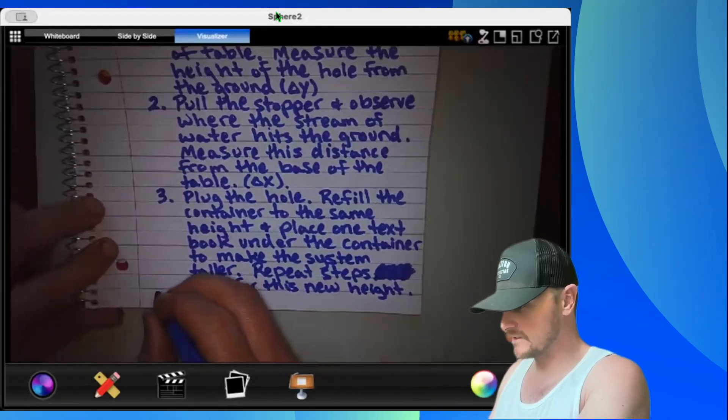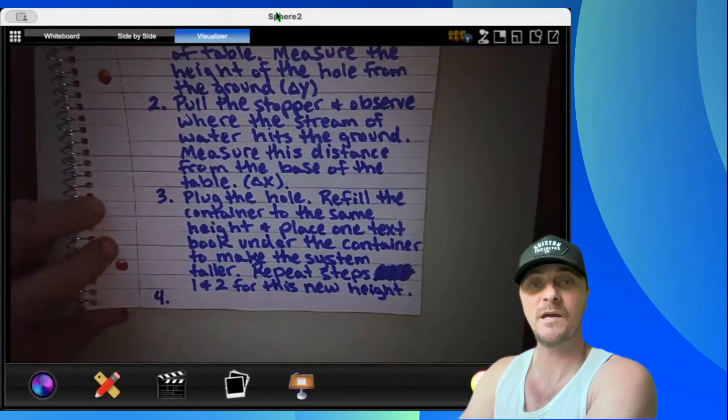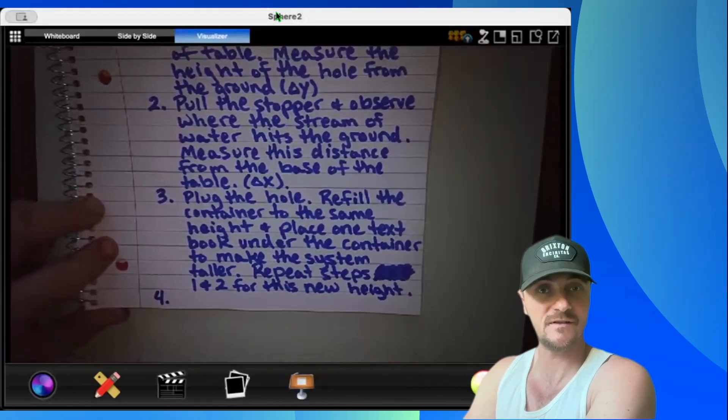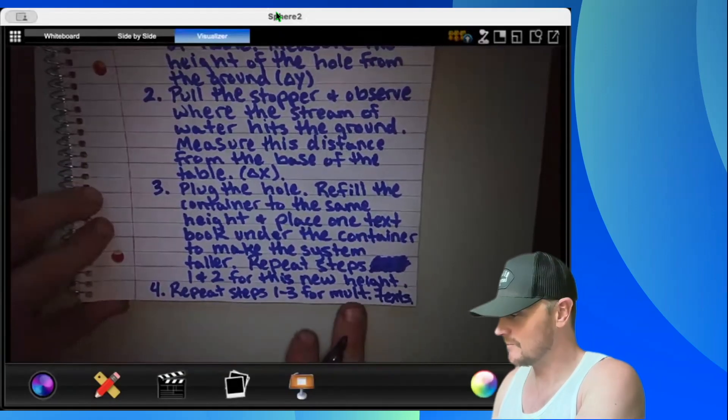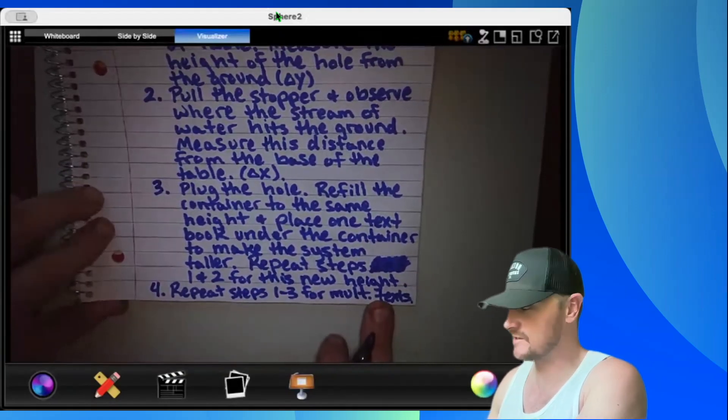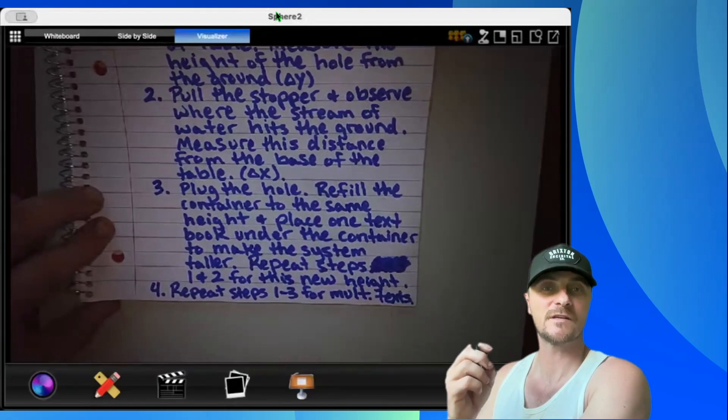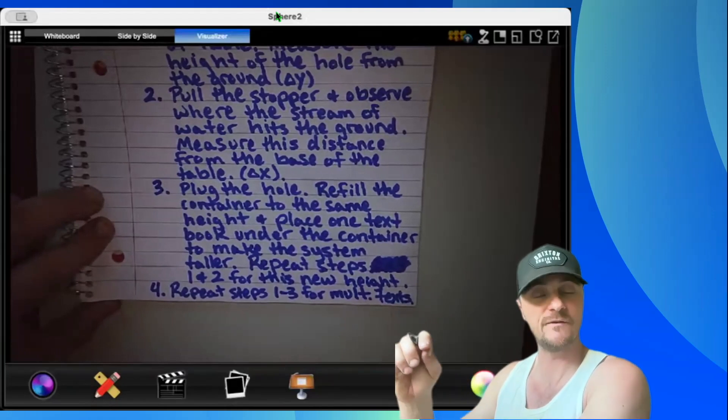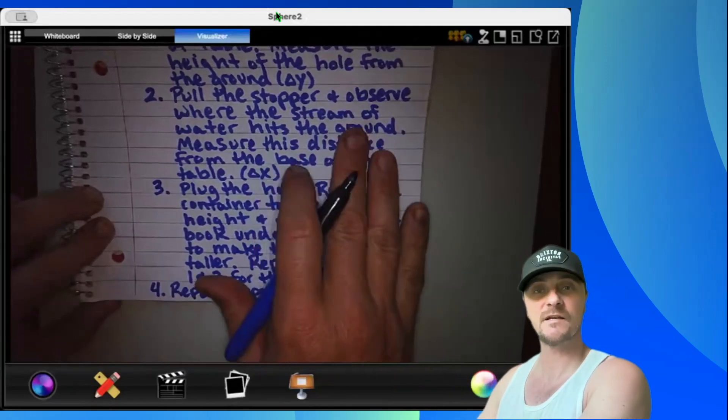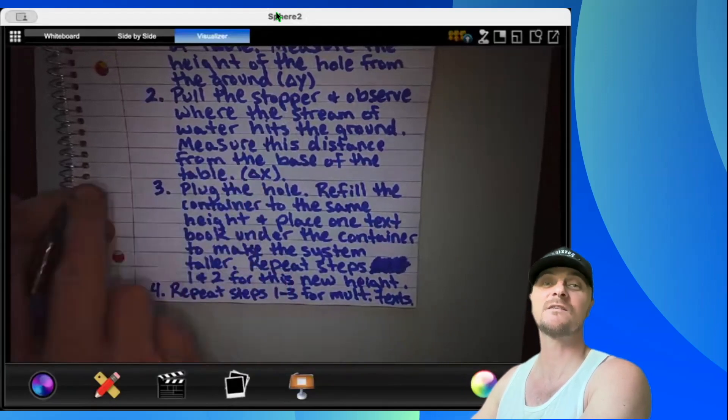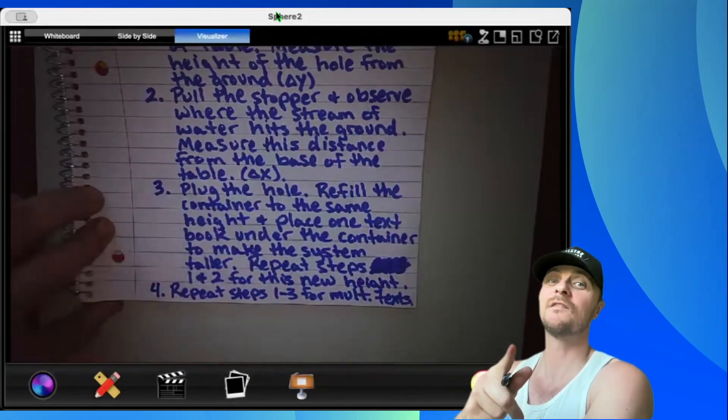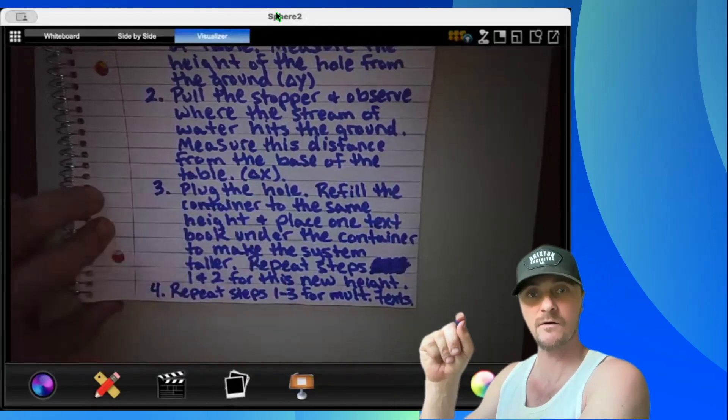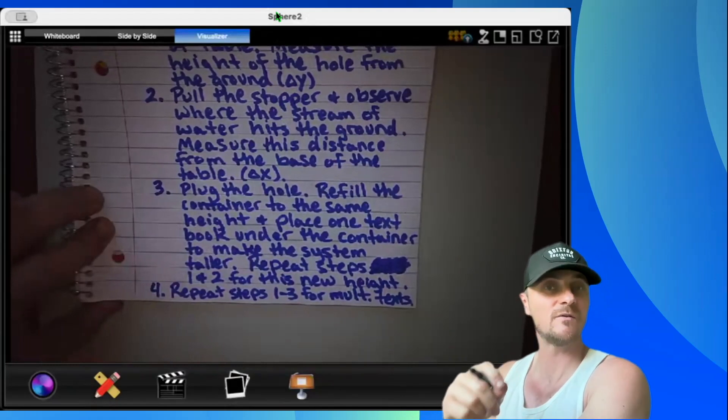And finally step 4: Repeat steps 1 through 3 for multiple textbooks to reduce experimental uncertainty. That's going to set us up with plenty of delta Y's and plenty of delta X's so we can do part B and find the velocity of that fluid coming out of the opening using graphical analysis.